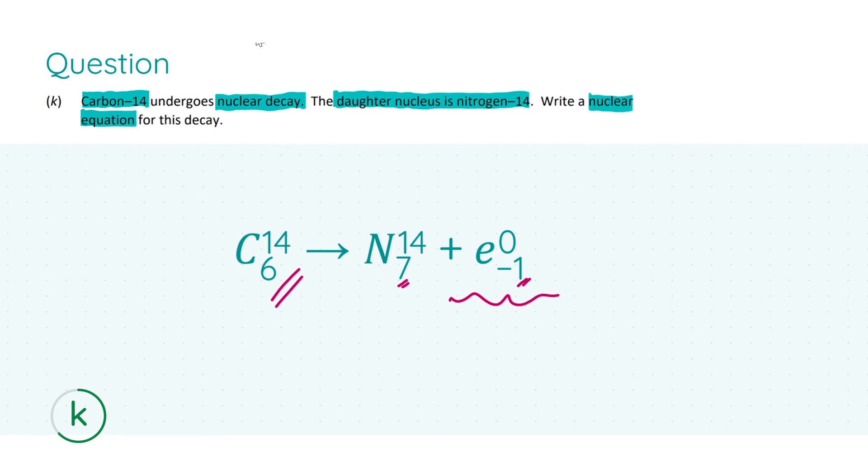Carbon 14 has six protons, that is its atomic number as you can see in the periodic table. Nitrogen 14 has an atomic number of seven. Therefore in order for this equation to be balanced we need a minus one which is where this electron comes in, the beta particle, because this is undergoing beta decay. This formula in its entirety will get you your full seven marks.